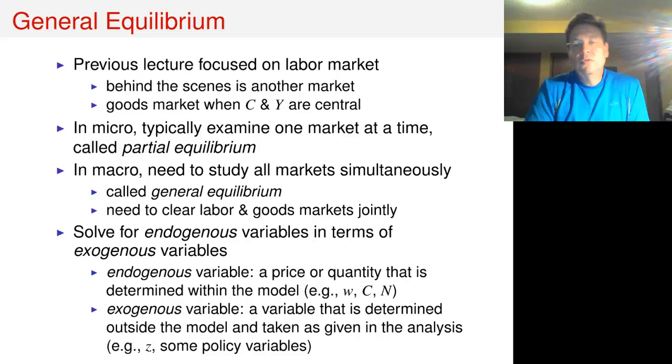Now in micro, you usually look at one market at a time, and that's called partial equilibrium. But in macro, you need to look at all markets at the same time. This is called general equilibrium.